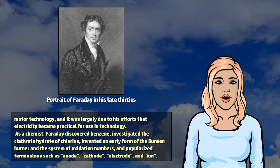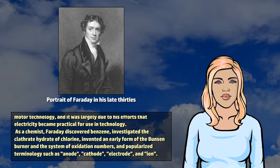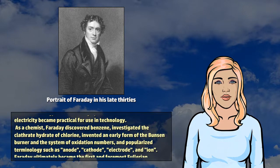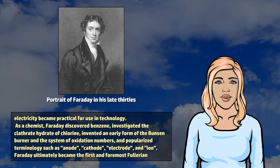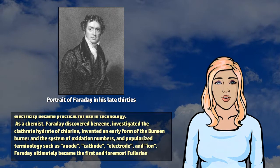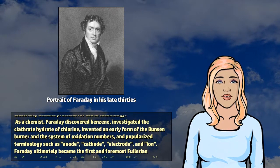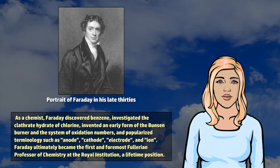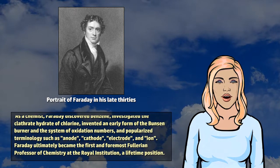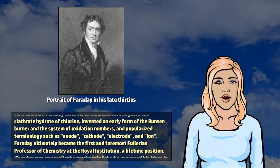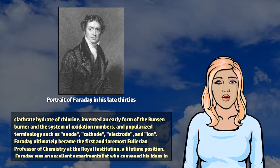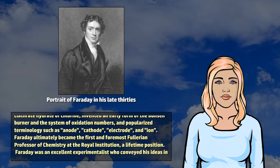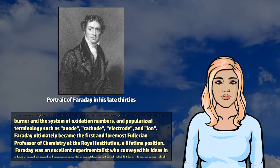As a chemist, Faraday discovered benzene, investigated the clathrate hydrate of chlorine, invented an early form of the Bunsen burner and a system of oxidation numbers, and popularized terminology such as anode, cathode, electrode, and ion.